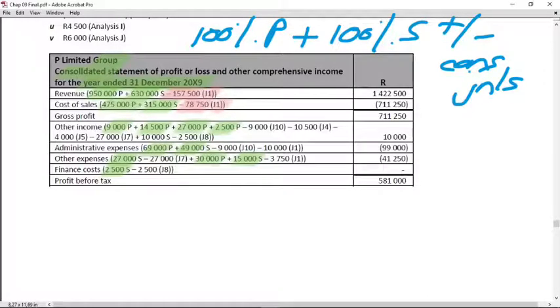Now that principle will then apply line by line to all the entries with the J1 reference. This is where we eliminate the three months before acquisition date cost of sales. In other income, there's no amount to eliminate because there was no other income of the subsidiary included in the before acquisition date column. In administrative expenses, there was that 10,000 Rand administrative fees that we eliminate.